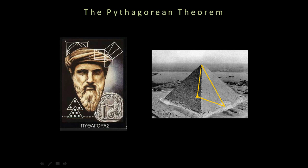Pythagoras is credited with coming up with this theorem, but a lot of people think that really the Egyptians came up with this concept. Here's why: the pyramids. You probably recognize this is one of the pyramids from Egypt. If you draw a line straight down from the point to the center of the pyramid and then out to the edge, you'd have a right triangle.